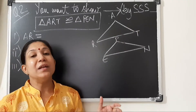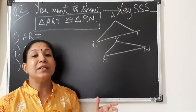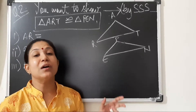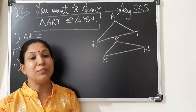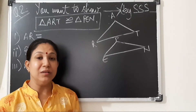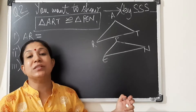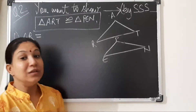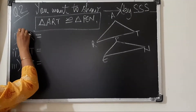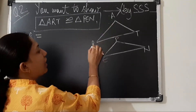In the side-side-side congruence criteria, if two triangles are congruent by this rule, it means the three sides of one triangle are equal to the corresponding three sides of another triangle. So here, what is given are three sides of triangle ART.